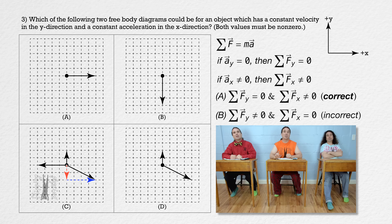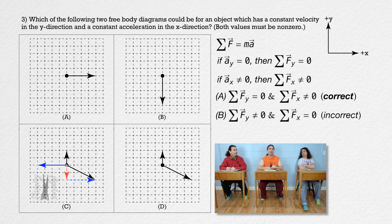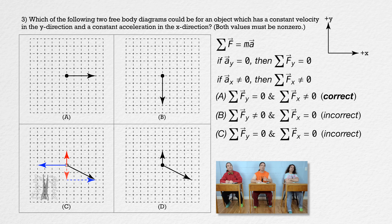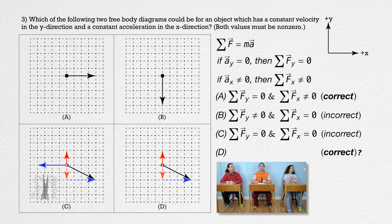The force pointing up is two grid spaces in length, balancing the y direction. The net force in all directions in choice C is zero, making it an incorrect answer. For choice D: the y component of the force acting down and to the right is two grid spaces down in red, which balances the upward force vector two grid spaces up also in red. That leaves the blue x component of the force acting down and to the right with no force to balance it. So choice D has zero net force in y and non-zero net force in x — making choice D a correct answer.